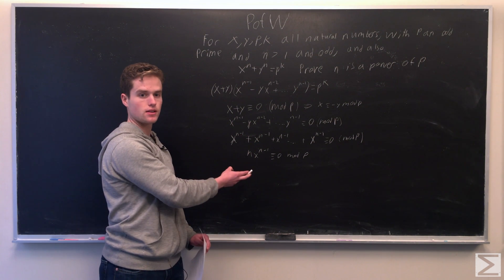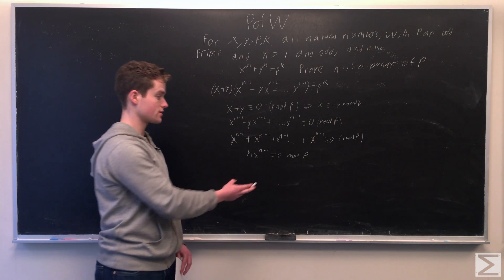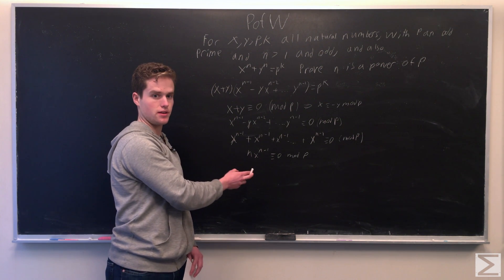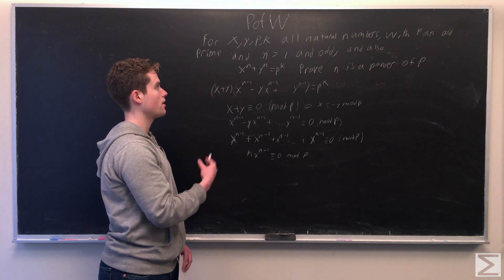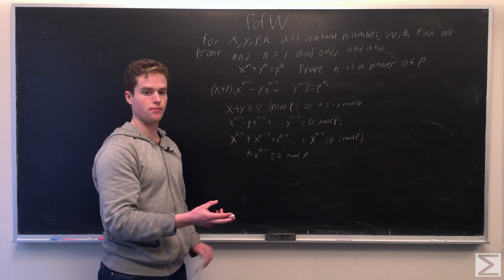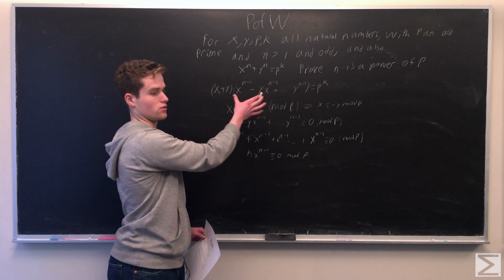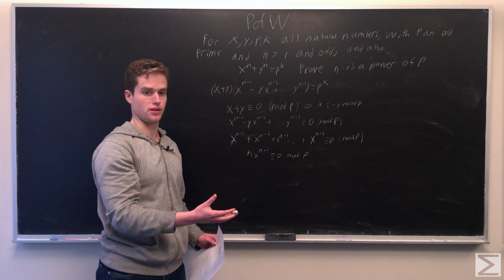So we have n times x to the n minus 1 is congruent to 0 mod p. Now, if x has any factors of p in it, then y has to have factors of p in it. And then, in this case, we could just factor out any factors of p and reduce this equation to an equation where x and y have no factors of p in them.